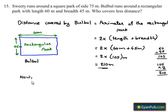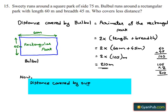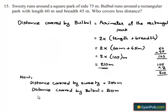Here, we can observe that 300 meters is greater than 210 meters. The distance covered by Bulbul is 210 meters. Therefore, we can say that Bulbul covers less distance.